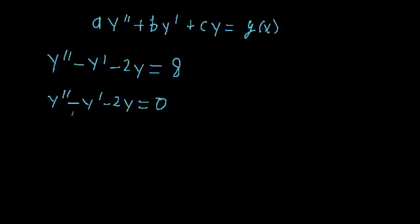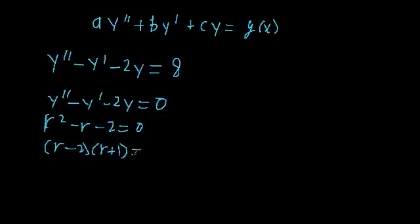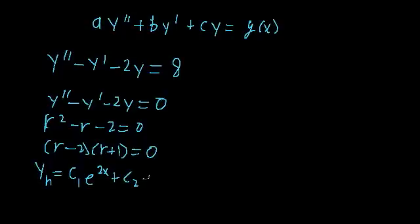We can do this quickly. The characteristic equation is r² - r - 2 = 0, or (r - 2)(r + 1) = 0. Which means our homogeneous solution is y_h = c₁e^(2x) + c₂e^(-x). So we've found the homogeneous part.